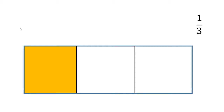Alternatively, we might want to find two-thirds, in which case we would be interested in two of those pieces. We're still dealing with the same three pieces because we're still dealing with thirds overall, but we are looking at two of them. And that's two out of three equally sized pieces.